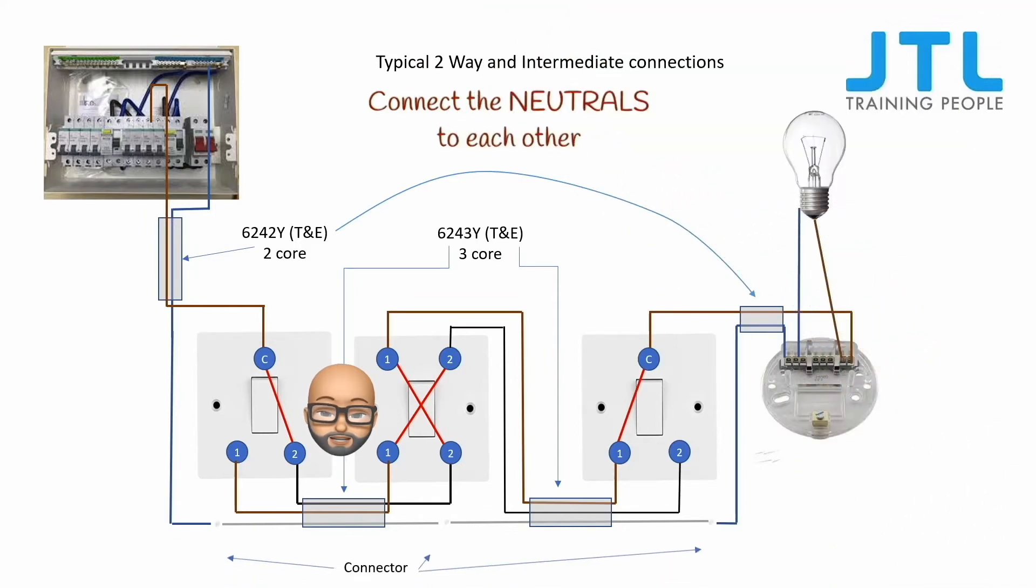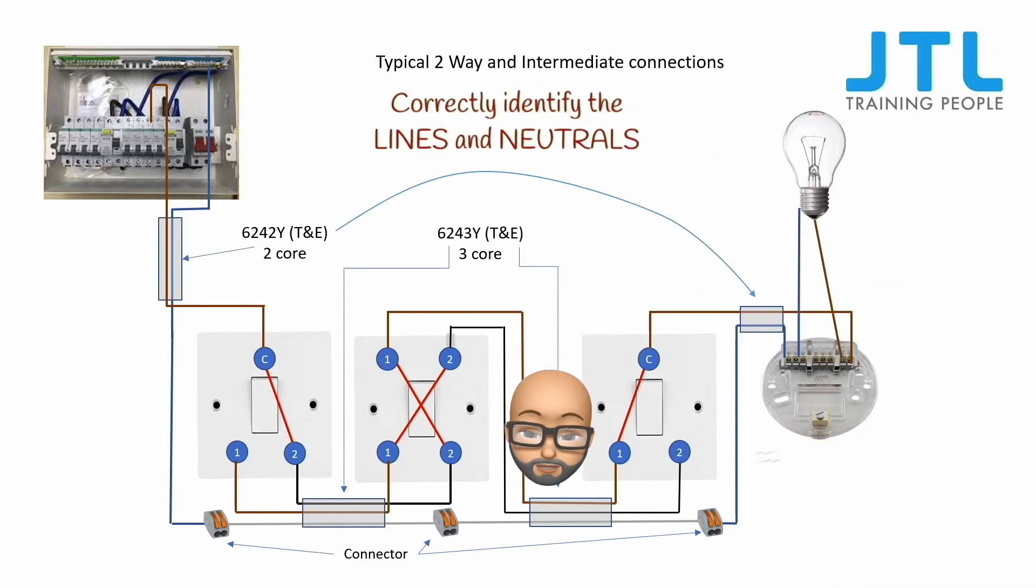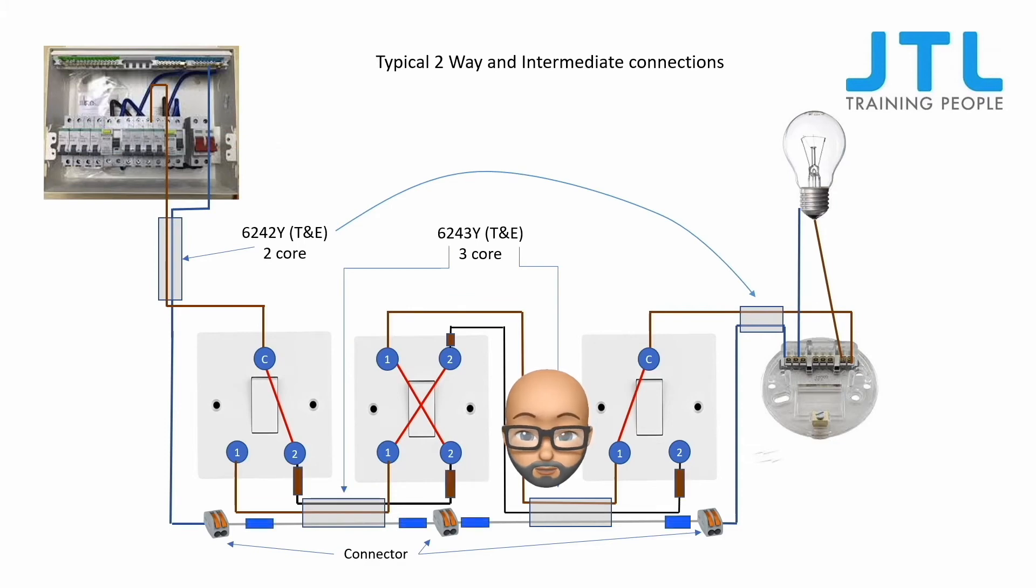Connect the neutrals at each switch with a connector block. And make sure you identify the line and neutral conductors with brown and blue sleeving.